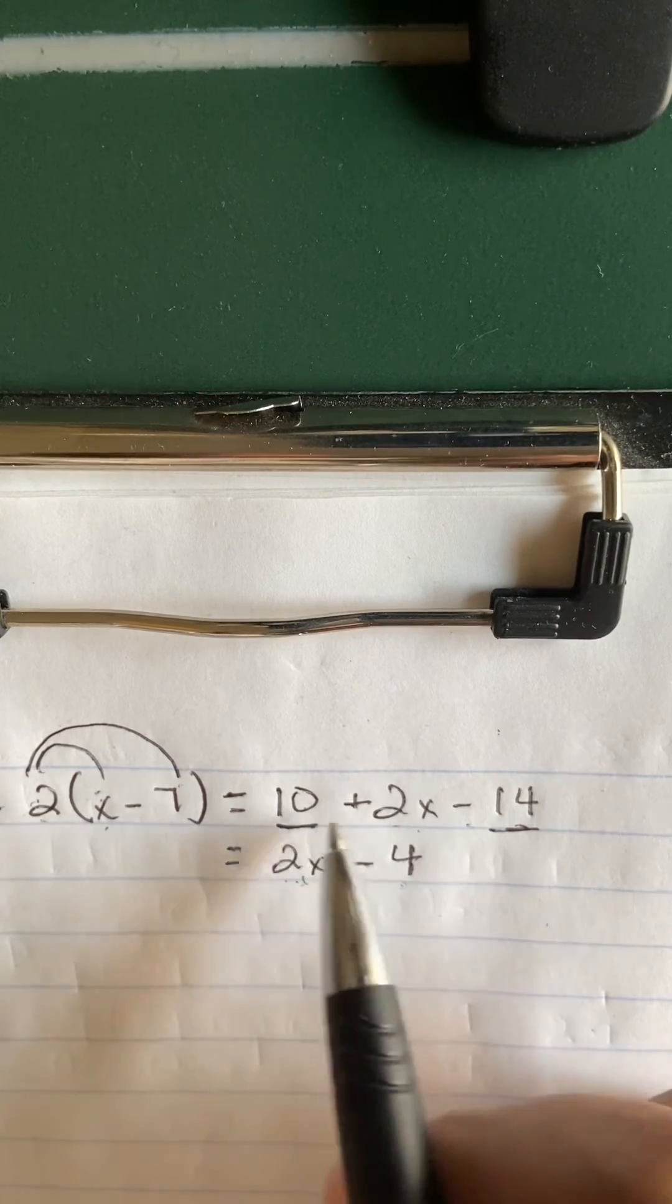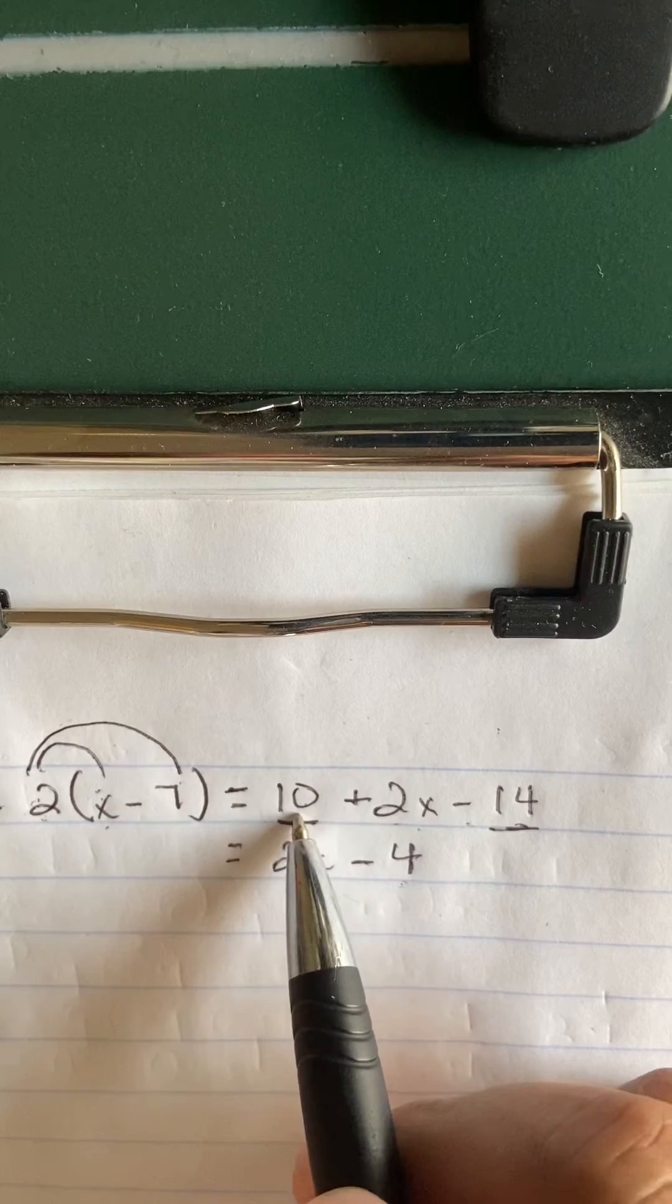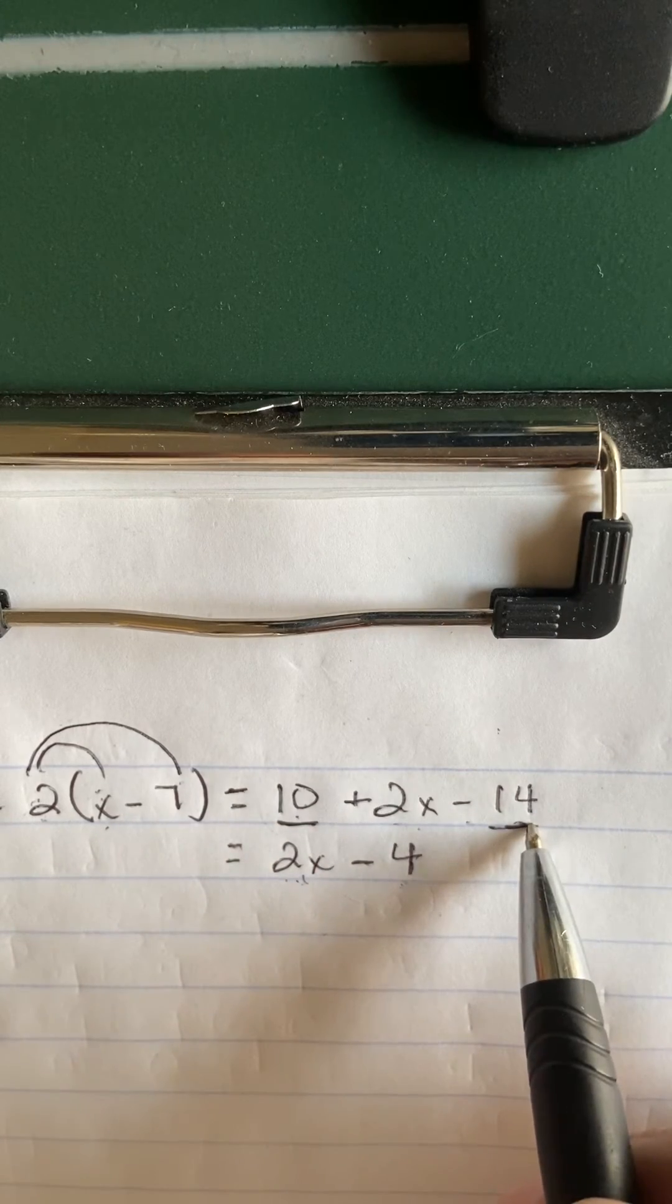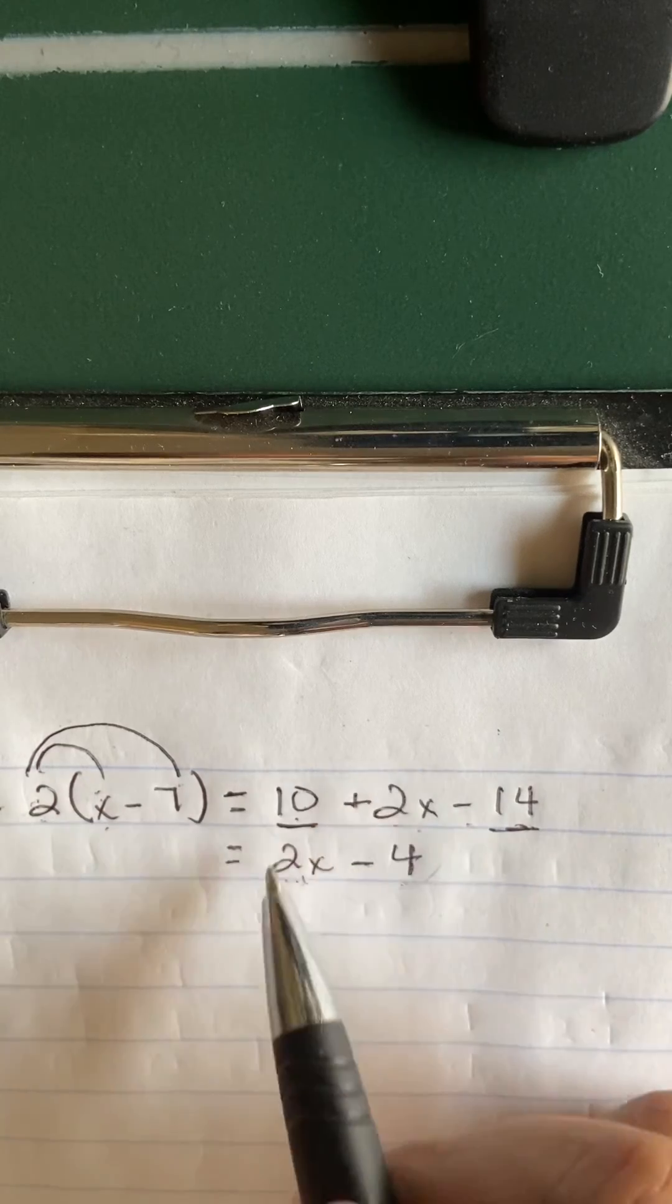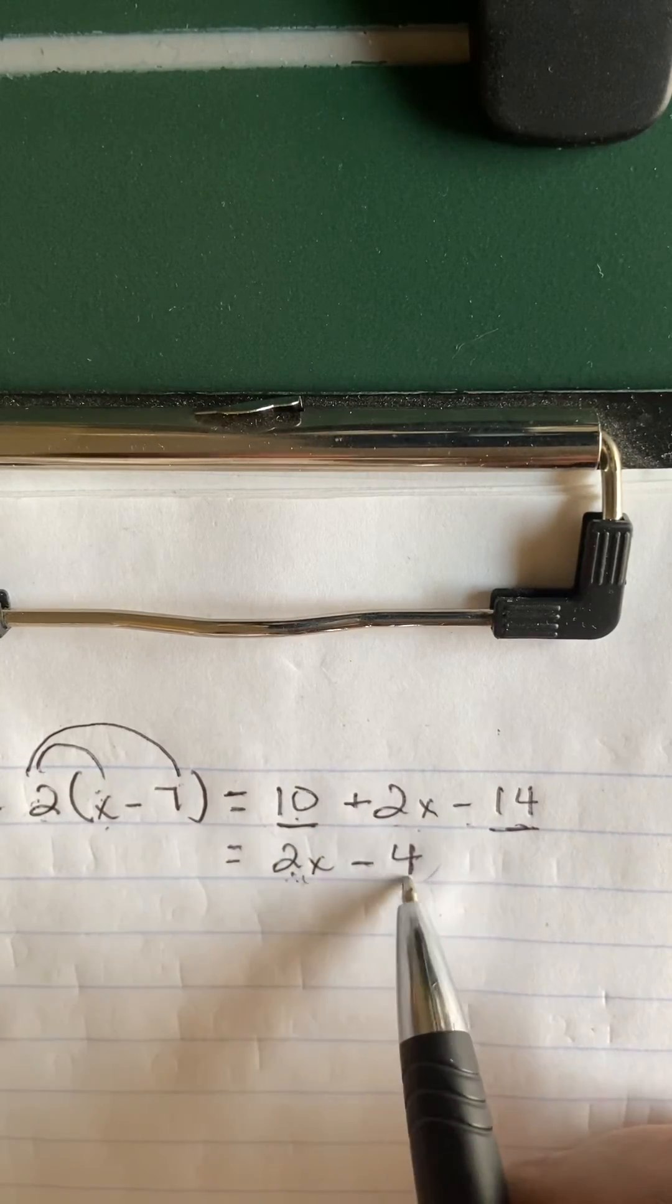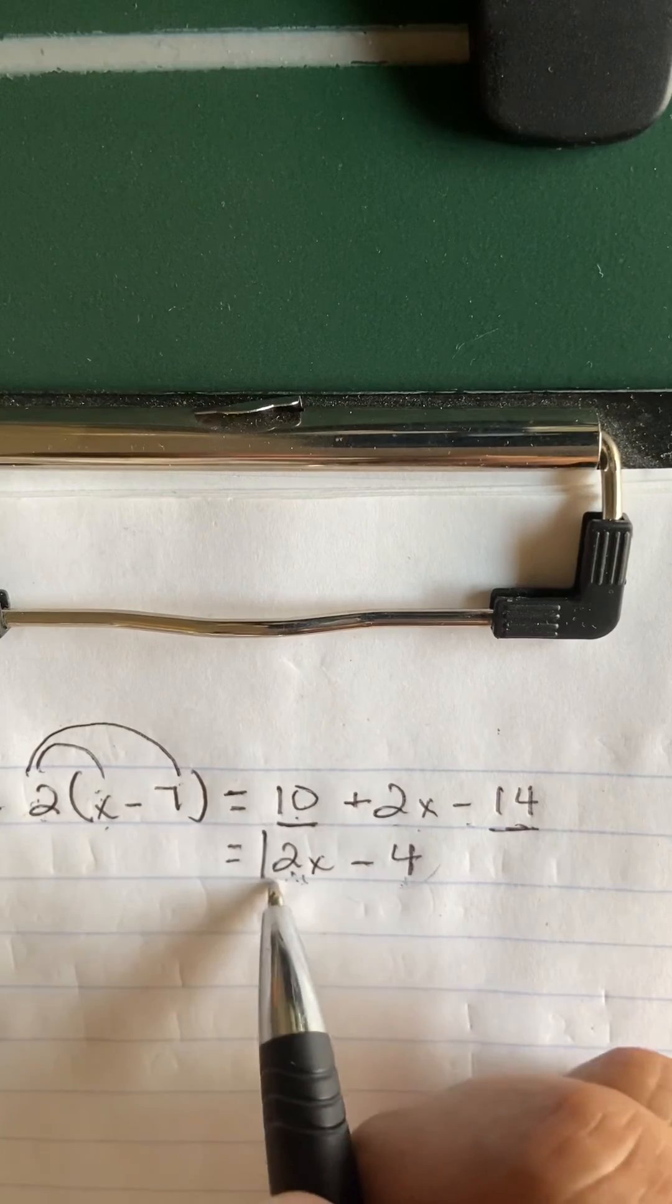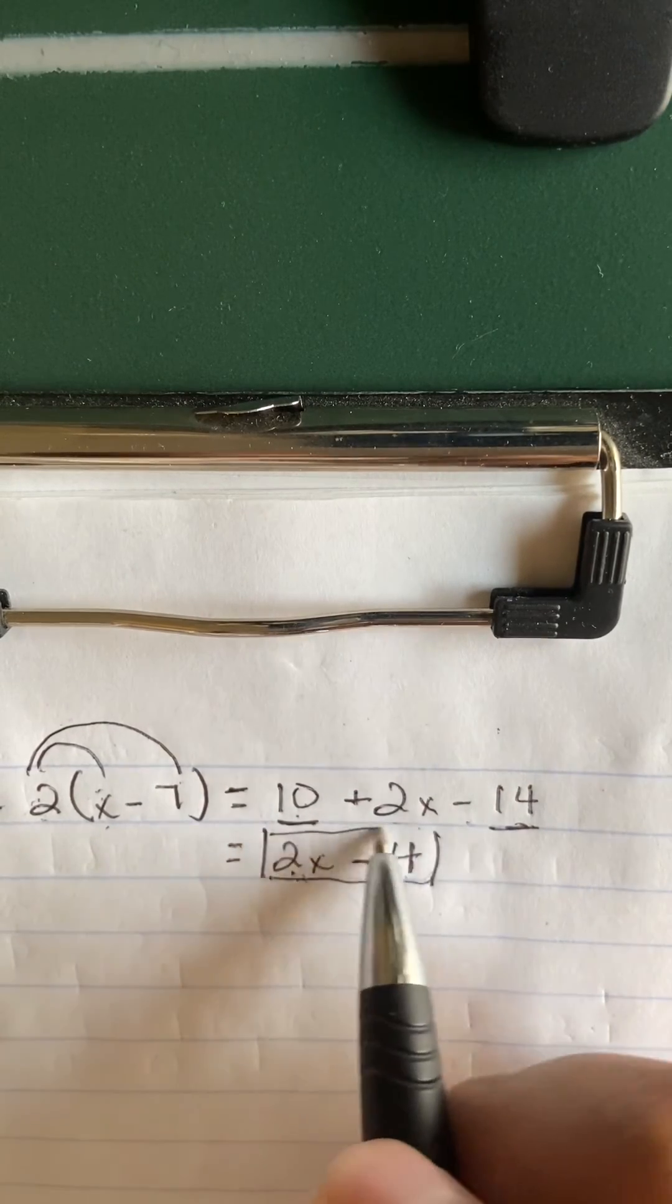So the only thing you can combine is this 10 and this negative 14. The 10 and the negative 14 simplifies to negative 4. The 2x was just there kind of in the mix, so you just got 2x minus 4, and that would be the final answer to number one.